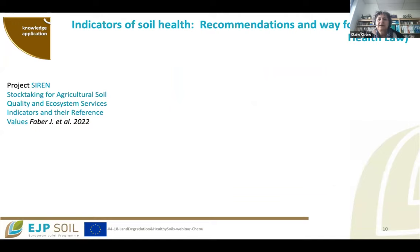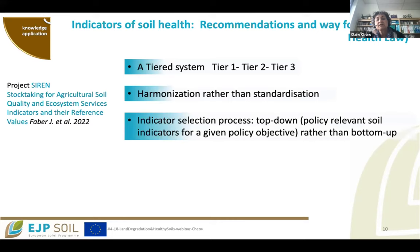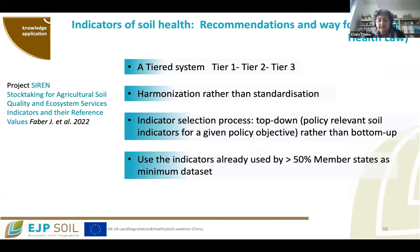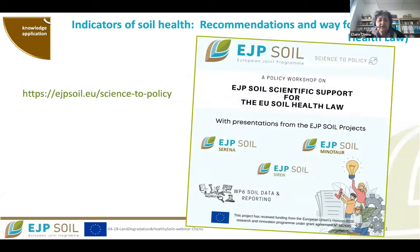Regarding indicators for soil health and the way forward, we propose a tiered system of indicators — which the current EUSO dashboard reflects — promoting harmonization rather than standardization. We propose a top-down indicator selection process based on policy-relevance for a given policy objective, using indicators already used by more than 50% of member states as a minimum data set, and associating stakeholders with indicator development to ensure adoption. These are recommendations we made in the perspective of the soil health law.